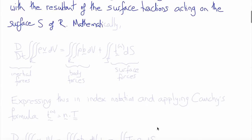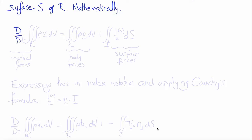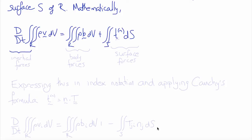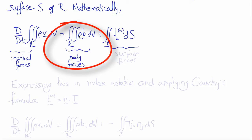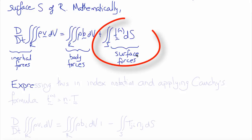So mathematically, we can write this as the material time derivative of the triple integral over R of the density times the velocity, with respect to volume, plus the double integral over S of the traction vector T integrated over the surface. The first term are the inertial forces — the rate of change of mass times velocity. The second term are the body forces. The third term are the surface tractions, the integral of all the surface tractions over S.